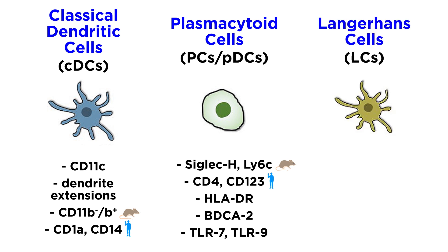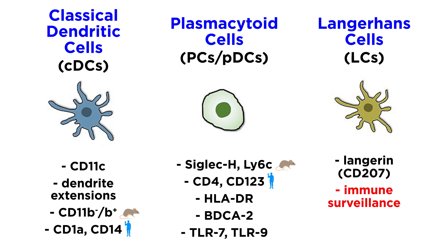Langerhans cells are a special member of the DC family that are usually situated in the oral mucosal epithelium and the skin epidermis. These can be distinguished by expression of Langerin, or CD207. Langerhans cells play an important role in immune surveillance by promoting immunity or tolerance through activation of antigen-specific T cells.